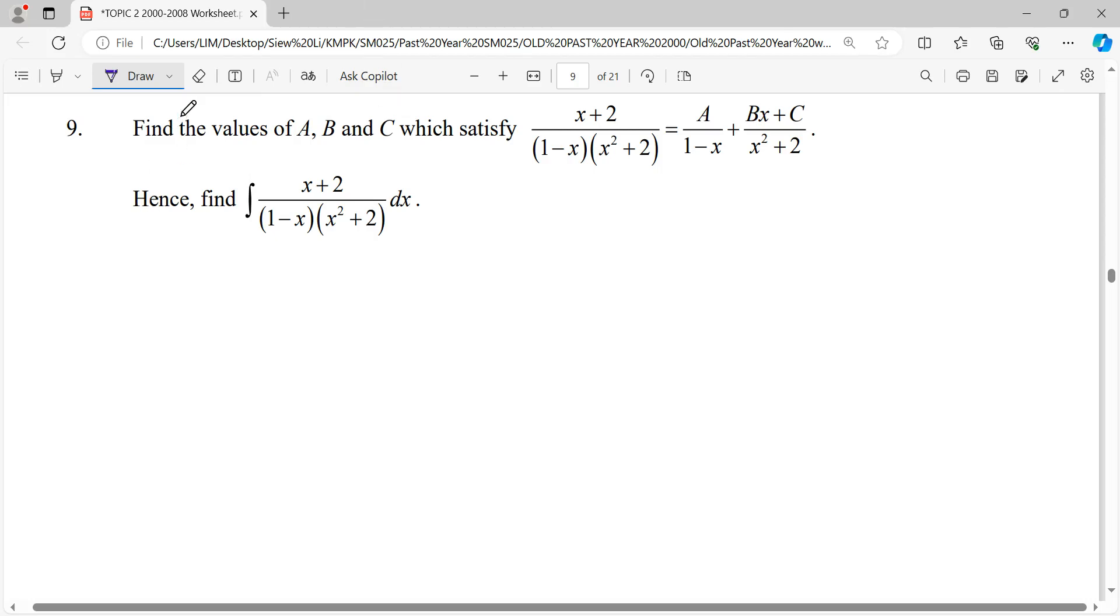Hi everyone, for this question it asks us to find the values of A, B, and C which satisfy this equation. This fraction is already expressed in partial form, hence integrate this fraction. First of all, x plus 2 over 1 minus x times x squared plus 2 will be expressed in partial form where the question already helps us express up to this unknown.